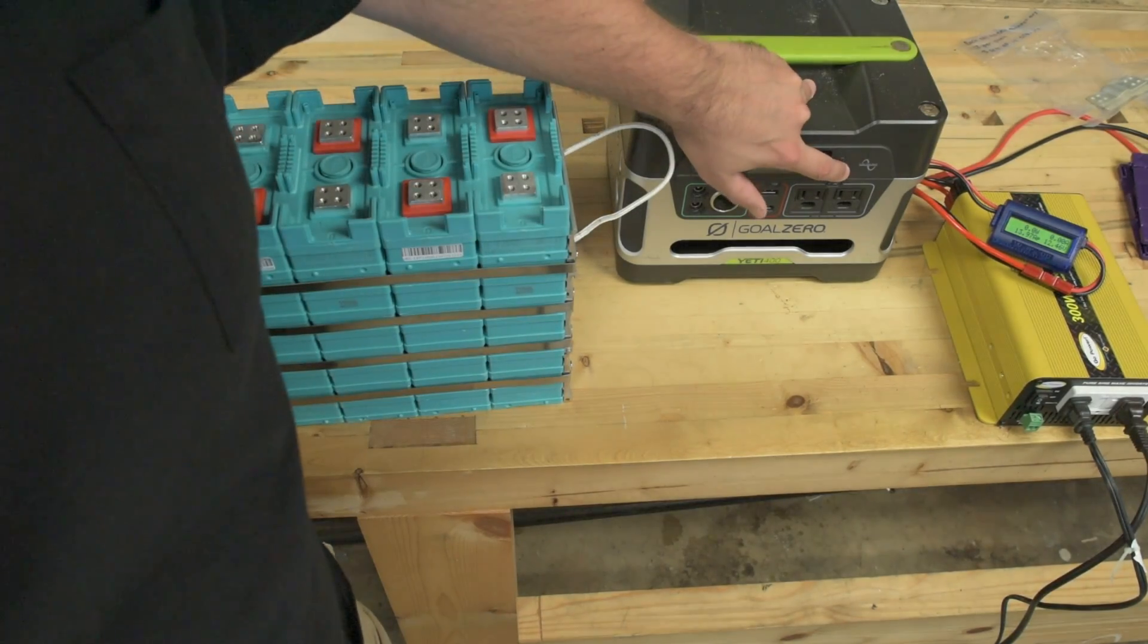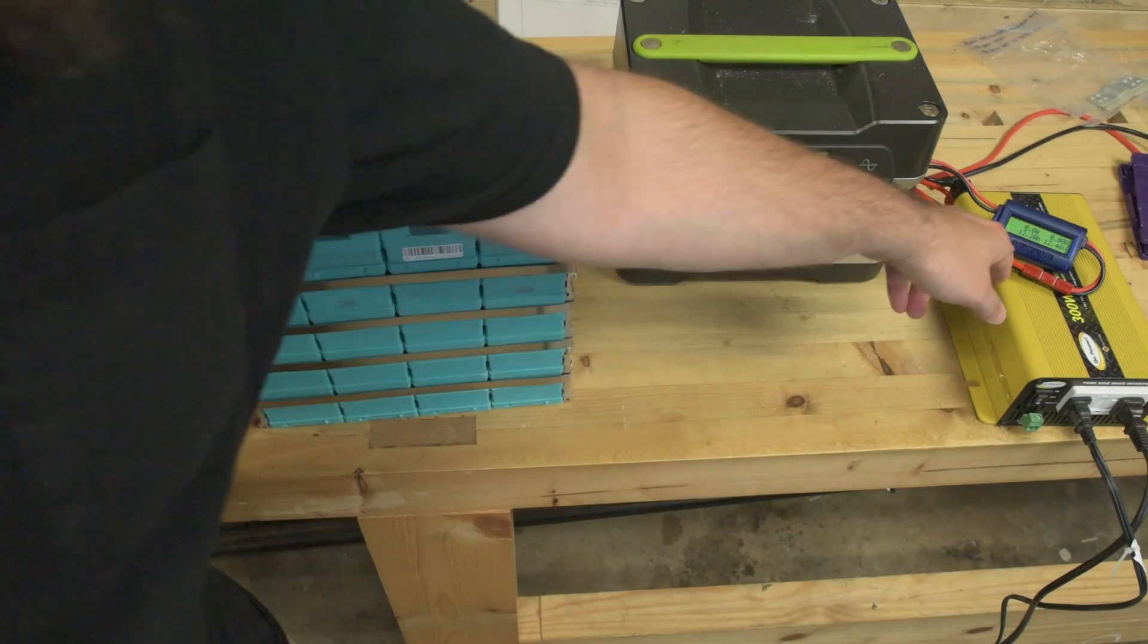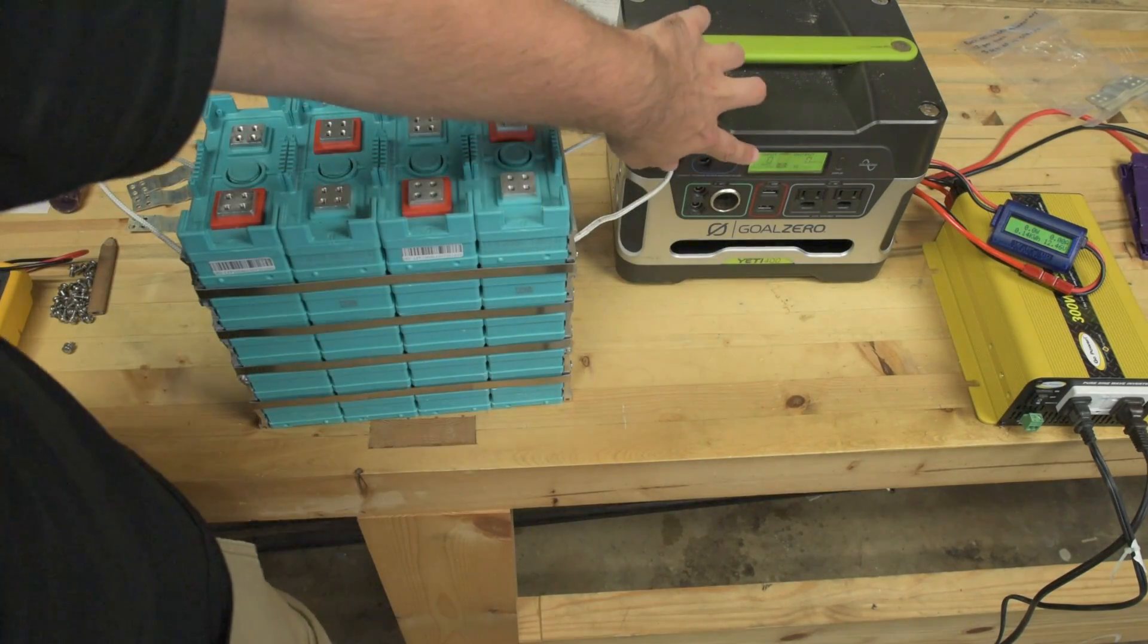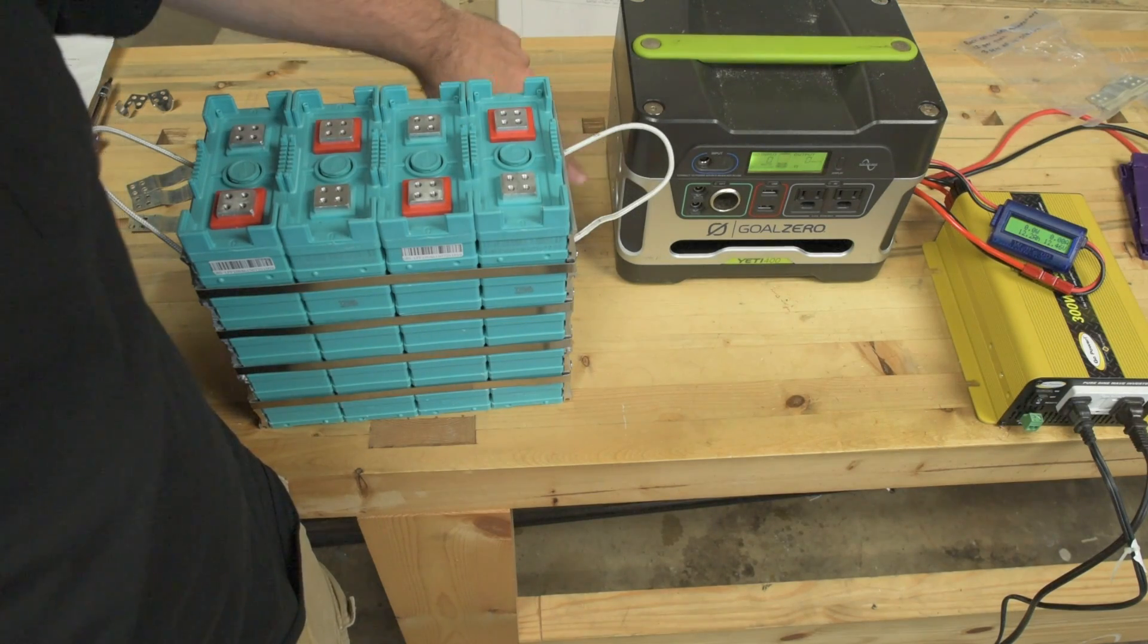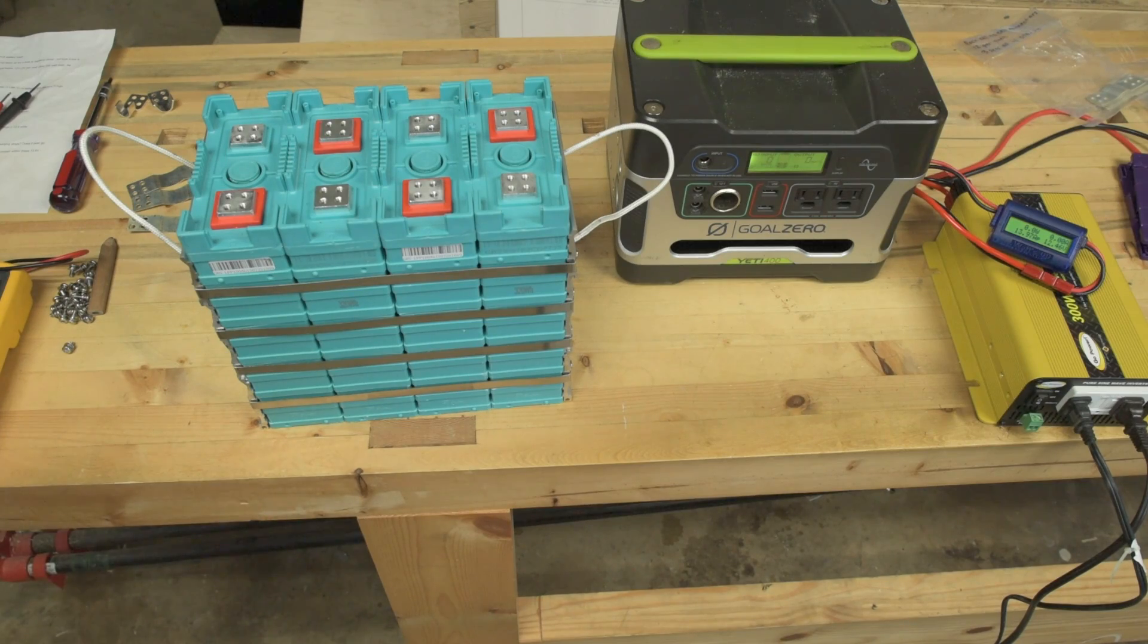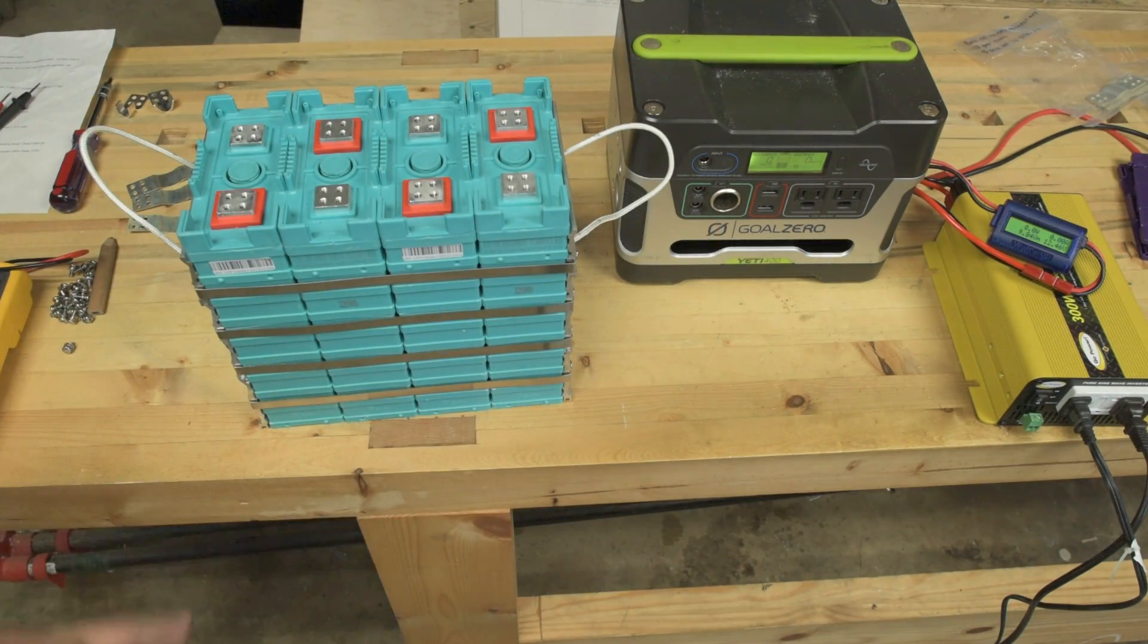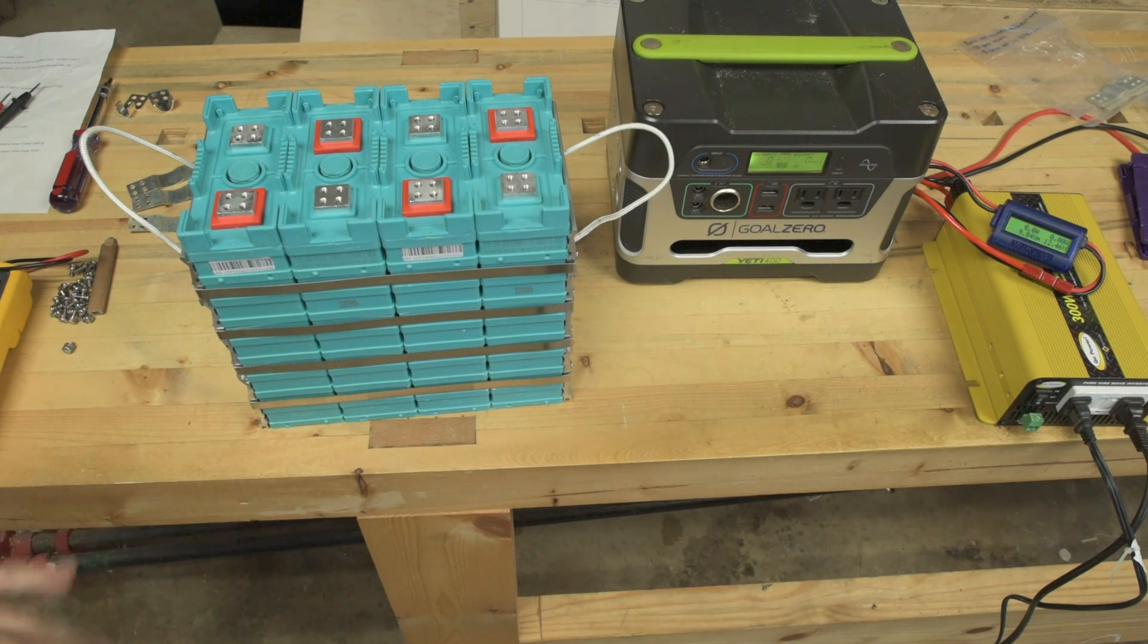My timer went off after about an hour. The power meter reads 12.46 volts and the meter on the Yeti reads a little bit below 50%. I think it's probably right at about 50%. At this point we're ready to hook up the Cell Pro Power Lab 8 and drain one of these cells down to 2.5 volts.